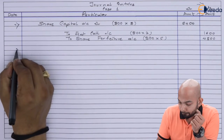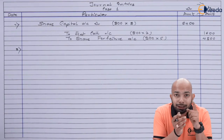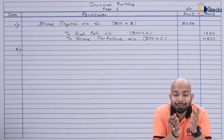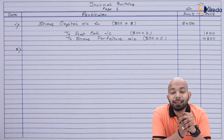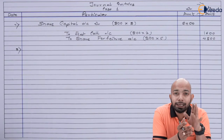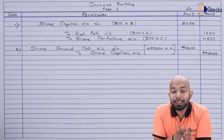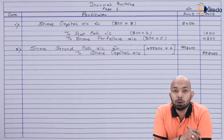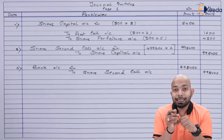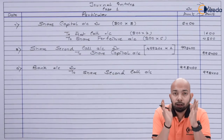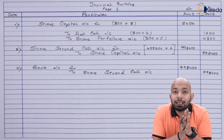Now for the second call due — this is the most common area where students make mistakes. Since the 800 shares have been cancelled and were not reissued, the second call is made only on the remaining 4,99,200 shares. The expected amount is 4,99,200 multiplied by ₹2 = ₹9,98,400. There are no calls in arrears for the second call, so the full amount is received, completing all journal entries for Case 1.